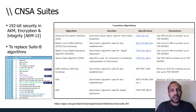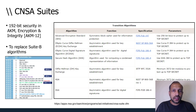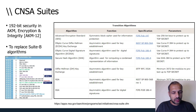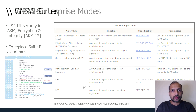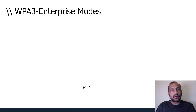Looking at the AKM table, AKM number 12 is CNSA-compliant. So if you are implementing the 192-bit mode, you will see AKM value 12 in use. There are three different deployment modes for WPA3 enterprise.